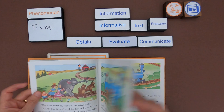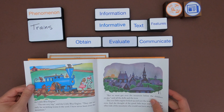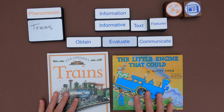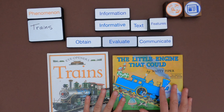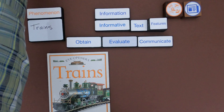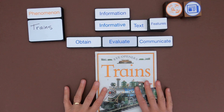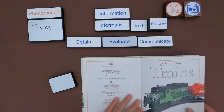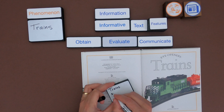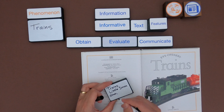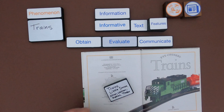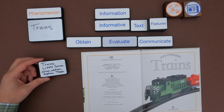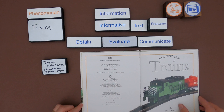As I look at 'The Little Engine That Could,' I can see it gives us information about trains, but it's not designed to give us information — it's a story. So I would not include this. I'm going to set that aside. Then I want to cite the information where I'm gathering it, so I'll write that down. The title is 'Trains,' this is by Little Simon, and there's no single author — I use the last names Oliver, Watson, Hopkins, and Taylor. So I'm citing that.